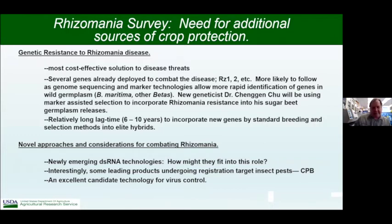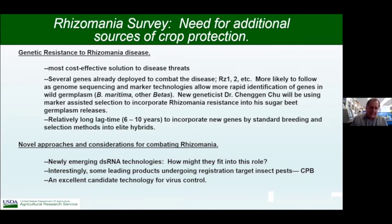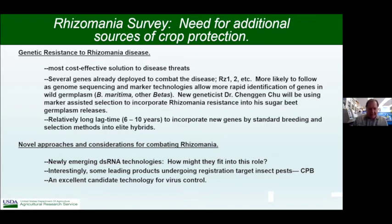Genetic resistance to Rhizomania disease remains the most cost-effective and most efficacious method to control this disease. Several genes have already been deployed — namely RZ1 and RZ2 — and there are additional genes that seed companies are continually looking at. We also have a new geneticist, Dr. Changan Chu, in our group who will be looking into wild germplasm collections for the possibility of finding new genes for Rhizomania resistance. However, there is a relatively long lag time — anywhere from 6 to many years — to incorporate new genes by standard breeding and selection methods into elite hybrids. So we've been looking at novel methods, including the newly emerging dsRNA or double-stranded RNA technologies, investigating how they might fit into this role, most likely as a seed dressing.